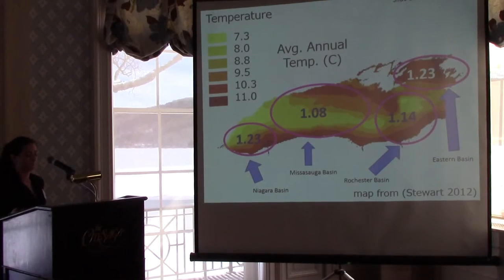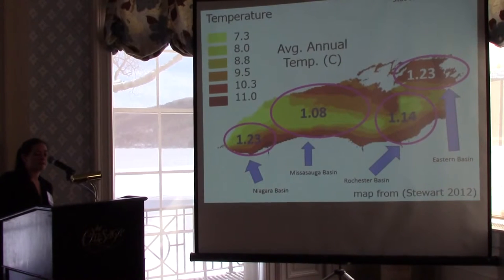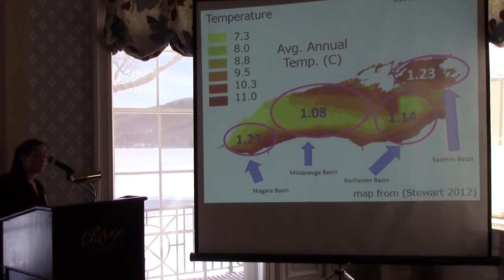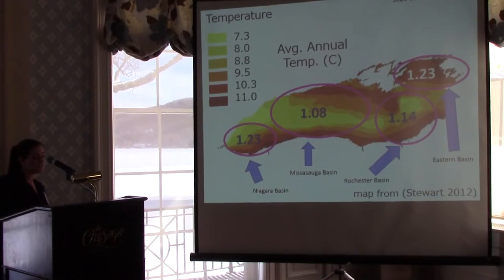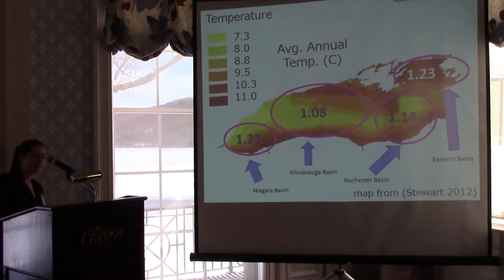So we looked at temperature. Checking the average temperature gradient, we see that the Niagara basin has a north-to-south increasing temperature gradient over the smallest area, and the eastern basin has by far the highest average temperature. The Rochester and Mississauga have relatively concentric temperature gradients. Again, no obvious trends stand out.